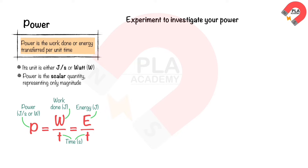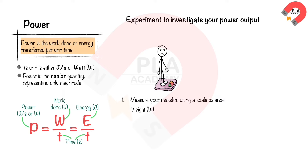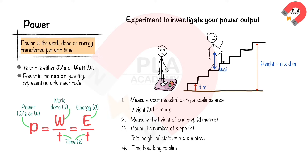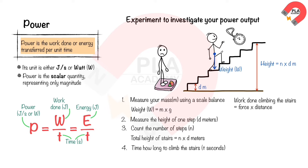Experiment to investigate your power output. First, measure your mass using a scale balance and multiply by gravity to get your weight in Newtons. Second, measure the height of one step of the stairs in meters. Third, count the number of steps, so the total height of stairs equals N × d meters. Fourth, time how long it takes to climb the stairs in seconds using a stopwatch. Work done climbing the stairs equals force times distance, where force is your weight and distance is the height of stairs, so work done is W × N × d. Power equals work done over time taken, so power = (W × N × d) / t.